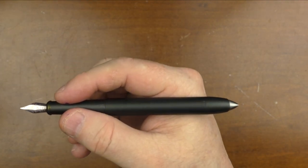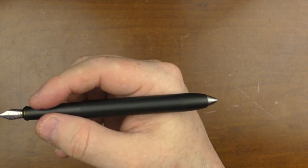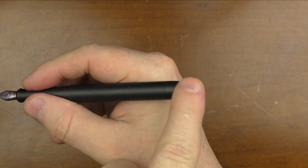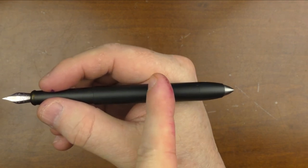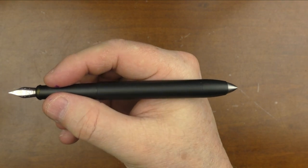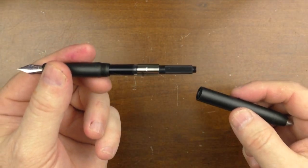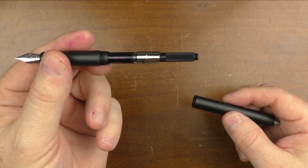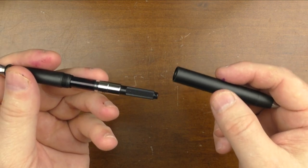I will say that the pen is a bit back-weighted, not so much that it's uncomfortable, but enough that I could notice it. The magnet and metal here in the back account for that, and the center of balance is kind of right around here toward the back of the barrel. This is a cartridge converter pen. It accepts standard international cartridges, and a Schmidt converter is provided.